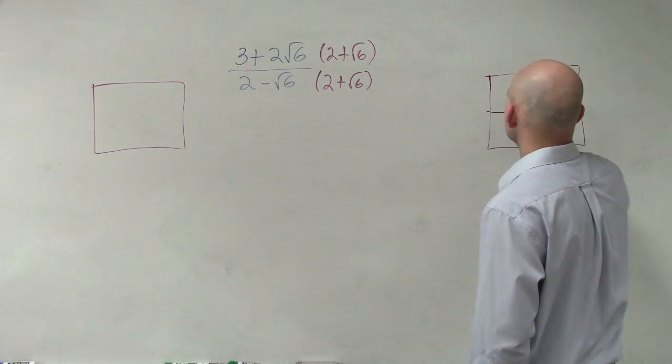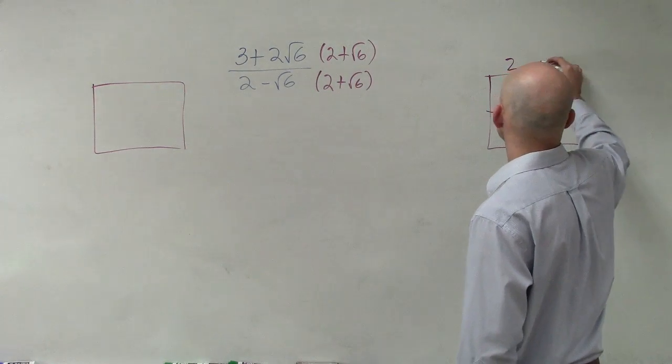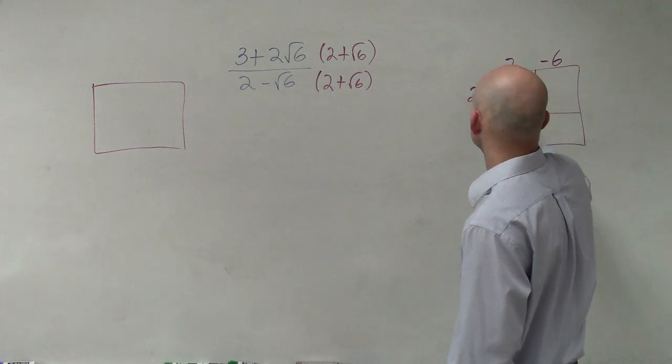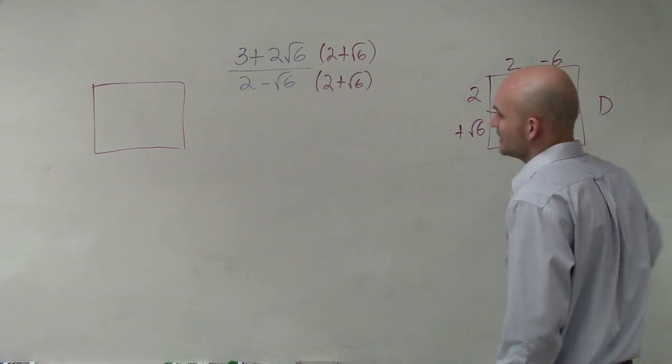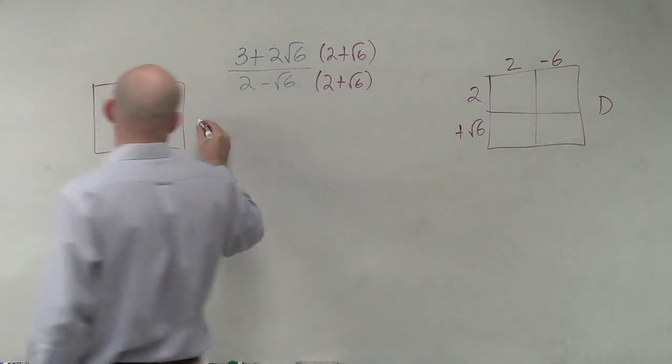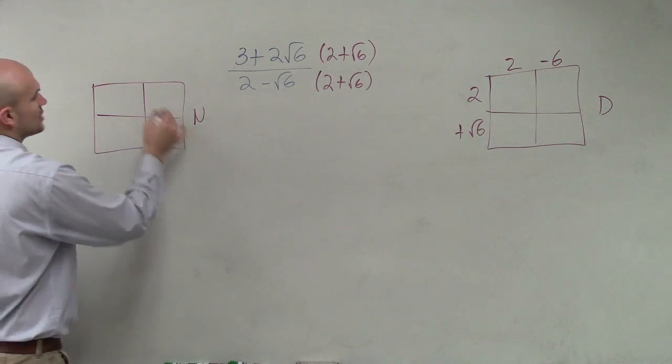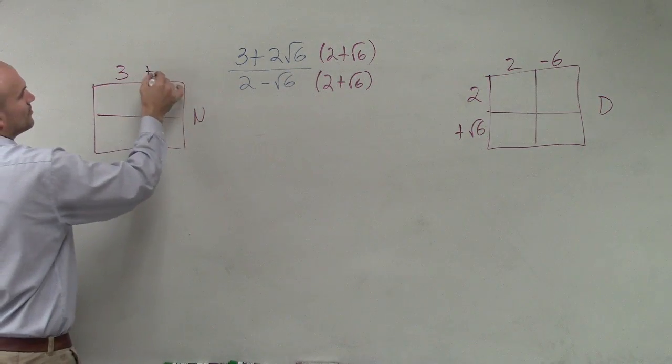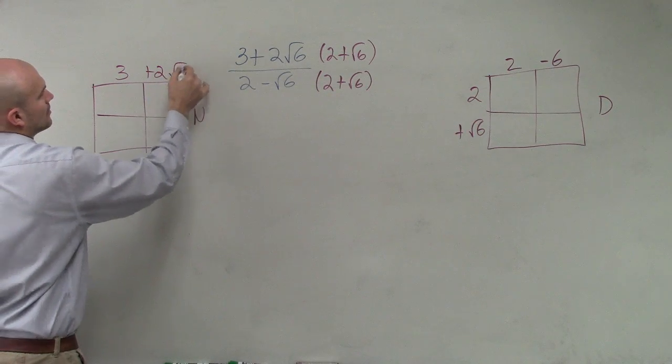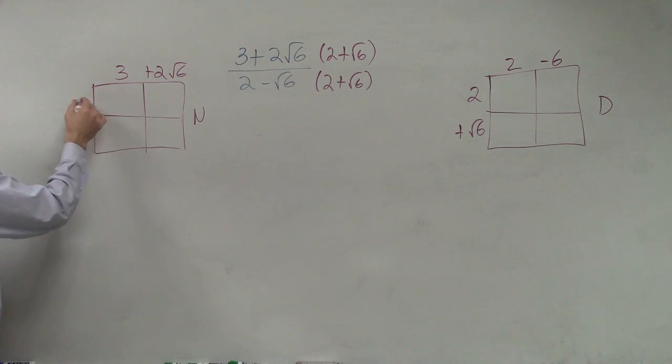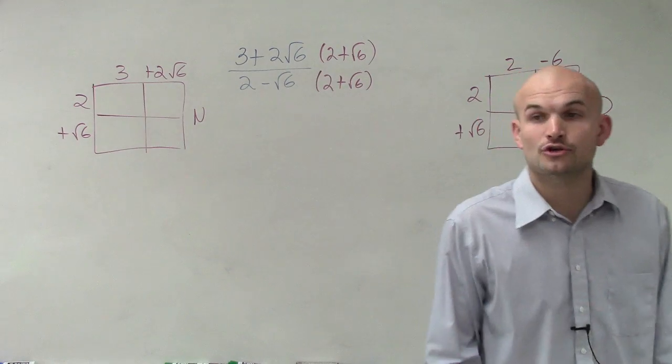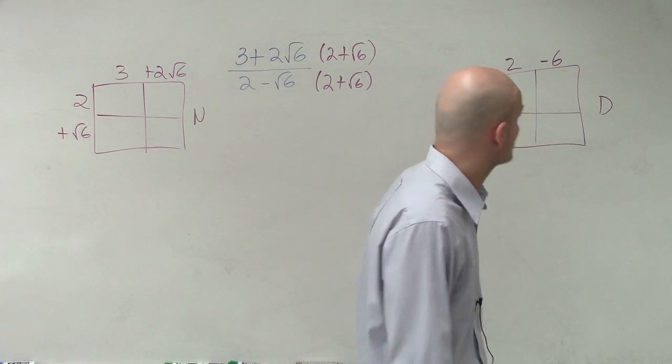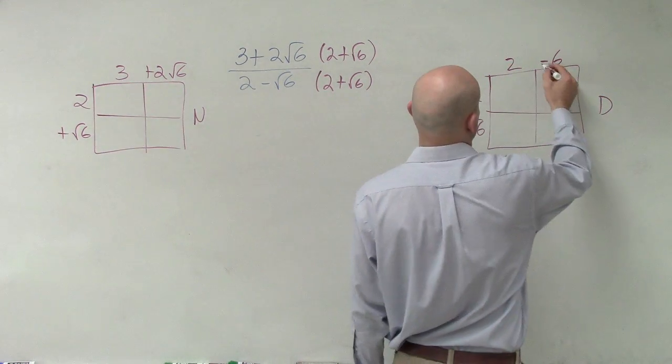I like using the box method to make sure everything is neat and in order. This is the multiplication process for the denominator, and this will be the multiplication process for the numerator. Does everybody see how I have this set up? You have to multiply binomials in the numerator and in the denominator.